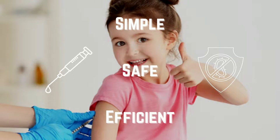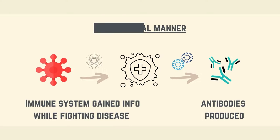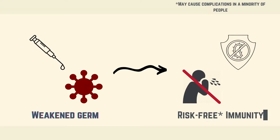Vaccines teach your immune system to make antibodies in the same way that it does when you are exposed to a disease. They do not cause disease or put you in danger of complications because they only include killed or weakened forms of the pathogens.